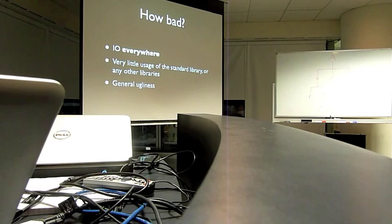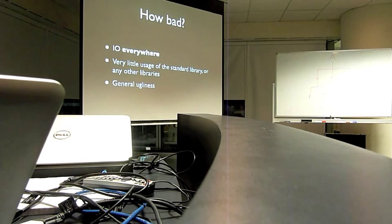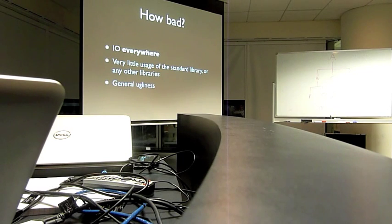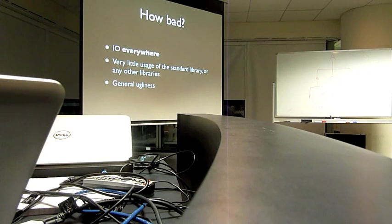So what do I mean by bad Haskell? Just about every function in Kit had IO in the type, which means it was doing some sort of side effect — reading stuff from the file system, writing out files, printing to stdout. All that sort of stuff. IO was everywhere.